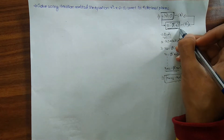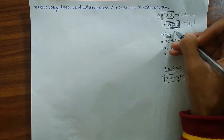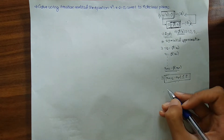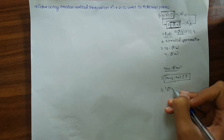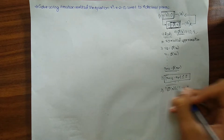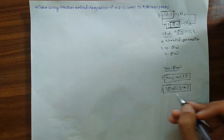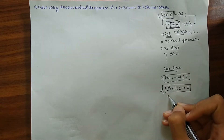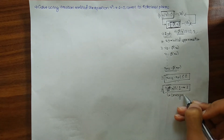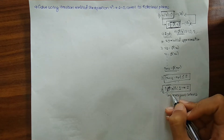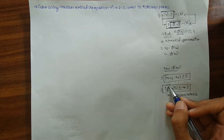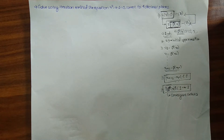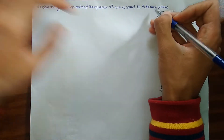For our choice of φ(x), there may be many possibilities. We need to choose φ(x) such that the modulus of the first derivative of φ(x) is always less than 1 in our short interval. This is our convergence criteria: |φ'(x)| < 1 must hold on the interval I on which we are working.